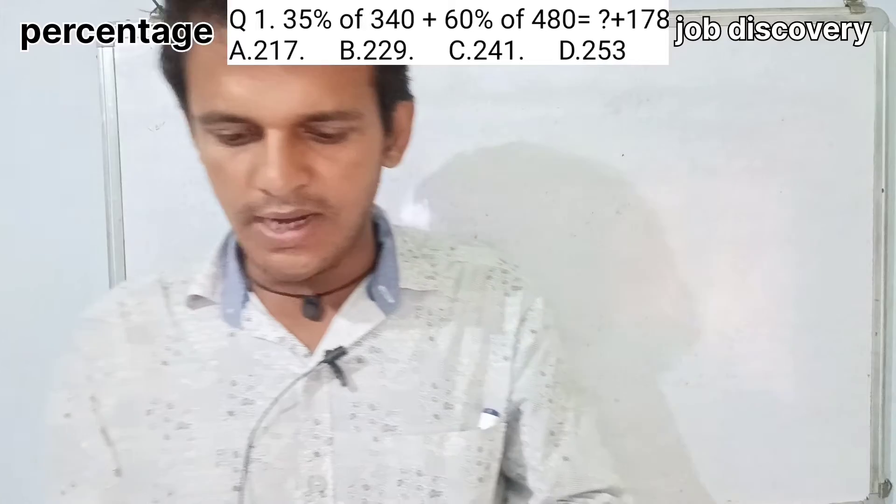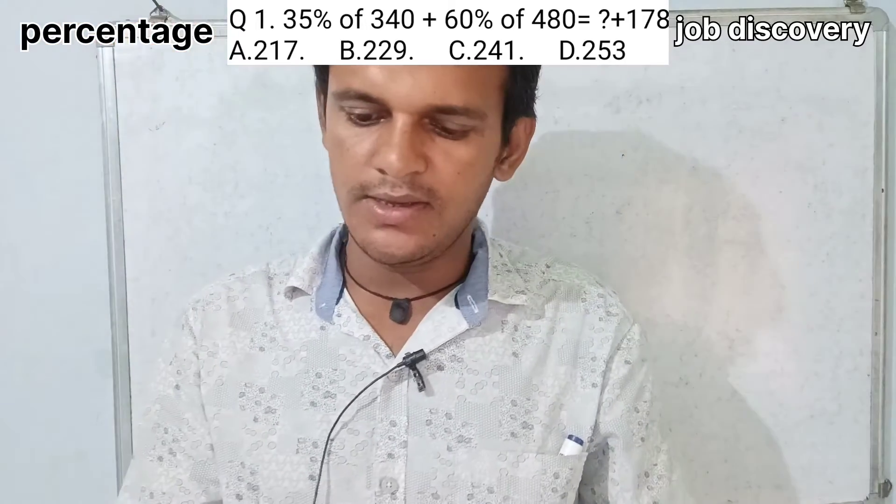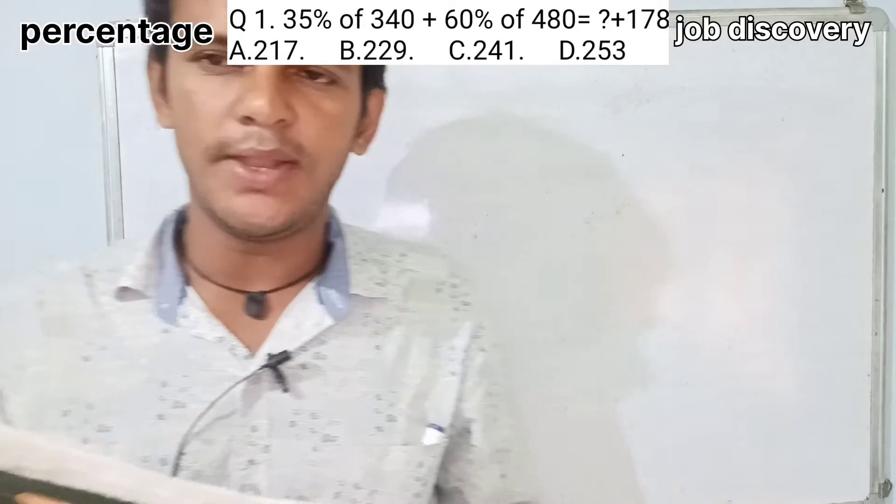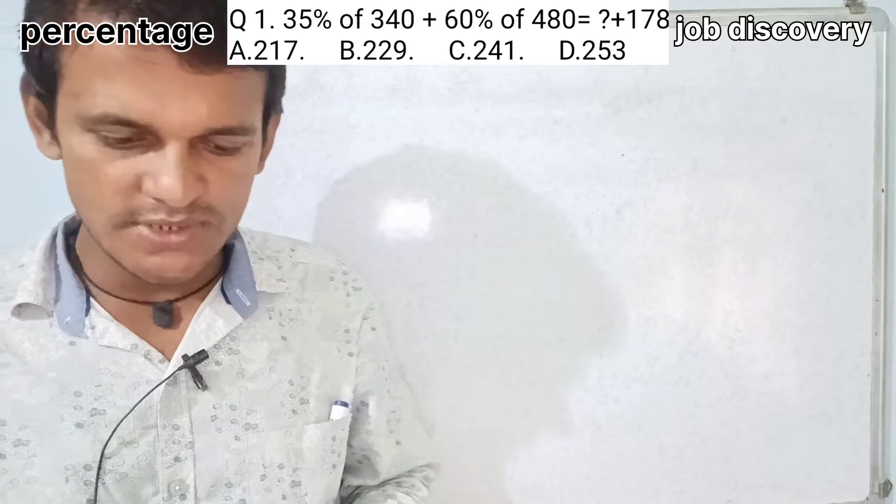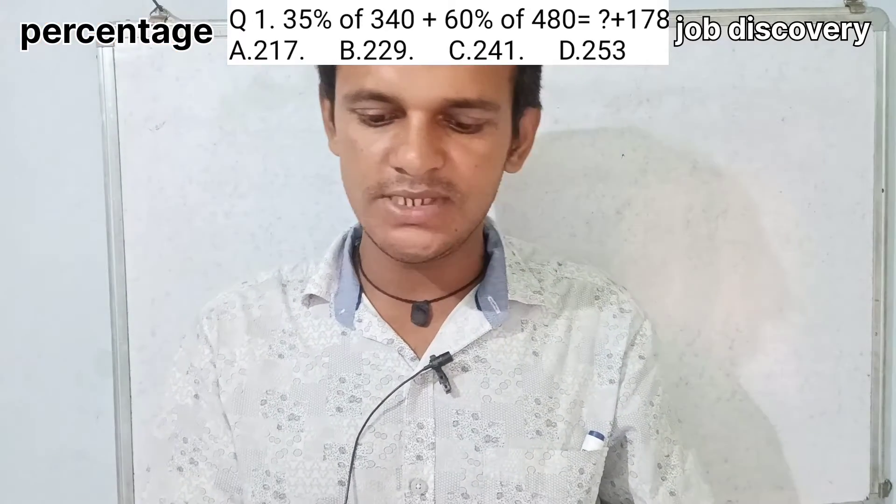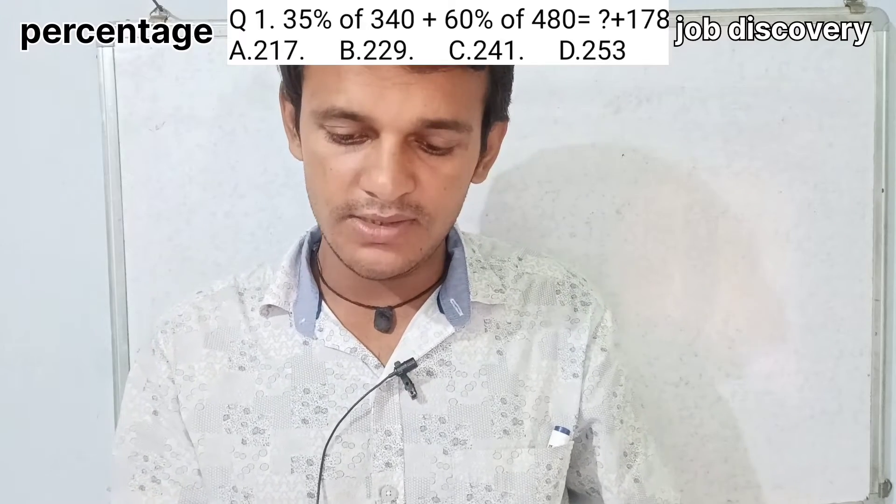Today question number 1 is 35% of 340 minus 60% of 480 is equal to question mark plus 178. We have 4 options. Option A is 217, Option B is 229, Option C is 241, Option D is 253.